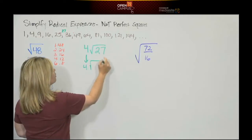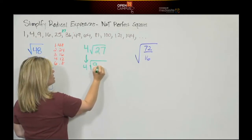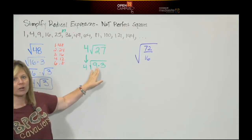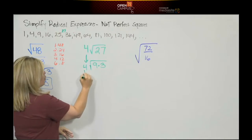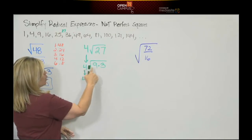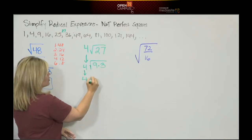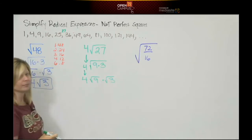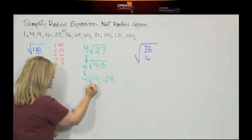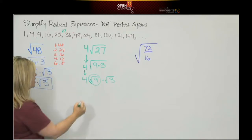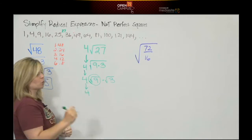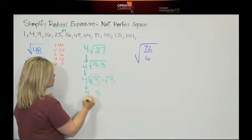So we're going to rewrite 27 as 9 times 3. Always put the perfect square number first. Again, this 4 in front we're going to bring down. We're going to rewrite this now as two square roots. This is the square root of 9 times the square root of 3. I can do this operation. I know what the square root of 9 is. So I'm going to leave my 4 in front. What is the square root of 9? That's the whole number 3.